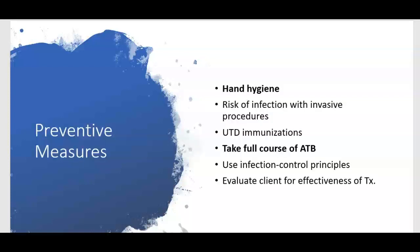Preventative measures for infection include hand hygiene, which is top of the list. Recognizing invasive procedures that increase infection risk is also important — indwelling urinary catheters carry high risk for CAUTIs, and IV catheters and cardiac catheterization can introduce bacteria. Patients should have up-to-date immunizations. A key NCLEX point is that patients must take the full course of antibiotics, even if they feel better. Finally, use infection control procedures to prevent transmission of resistant microorganisms and evaluate the effectiveness of treatment.